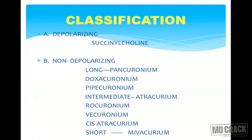Muscle relaxants are classified into depolarizing and non-depolarizing types. Succinylcholine is the only currently used depolarizing muscle relaxant. Non-depolarizing muscle relaxants are grouped into long-acting, intermediate-acting, and short-acting. Long-acting examples include pancuronium, doxacuronium, and pipecuronium.